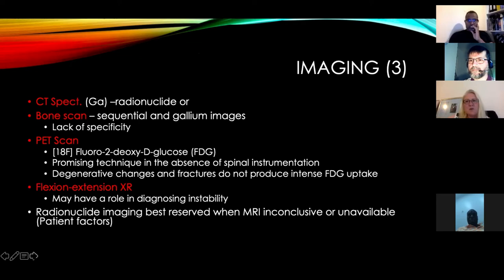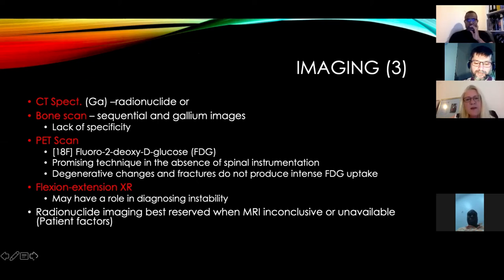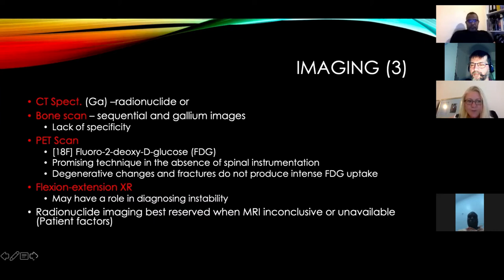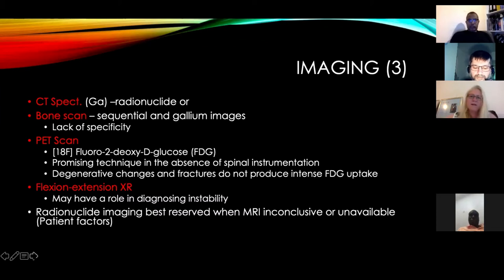Other imaging modalities include CT SPECT with gadolinium or a bone scan with sequential and gallium images — used when MRI is not possible, but less specific. A PET scan, if available, can be used in the absence of spinal instrumentation and has the advantage of not showing intense FDG uptake in degenerative changes or fractures — only in infection. Flexion-extension X-rays may have a role in diagnosing instability. Overall, MRI is the gold standard.